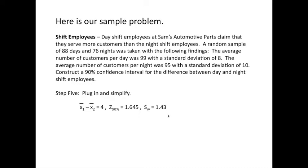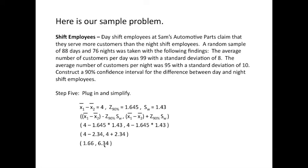Step 5, we would plug this value in and simplify. So, we're getting ready to roll. Hang on, friends. Good things are just around the corner. So, we plug those values in, 4 and 1.645 and 1.43, and away we go. We multiply this times this. We get 2.34.